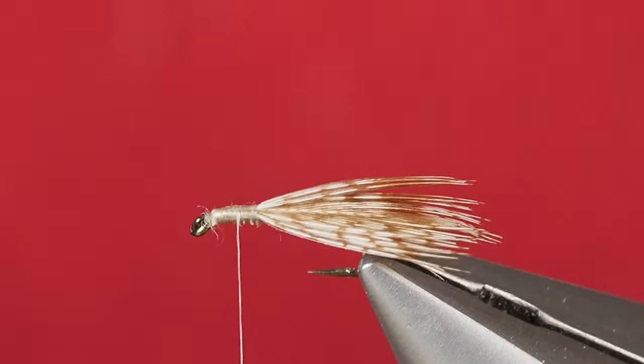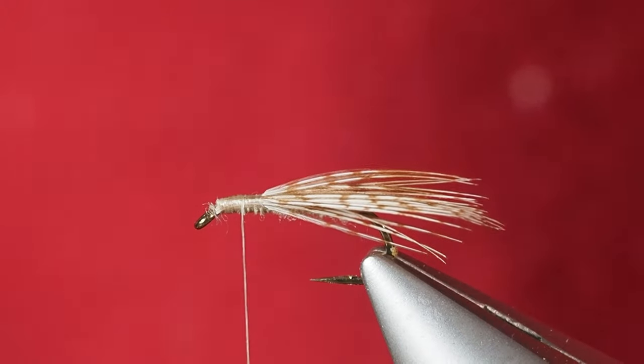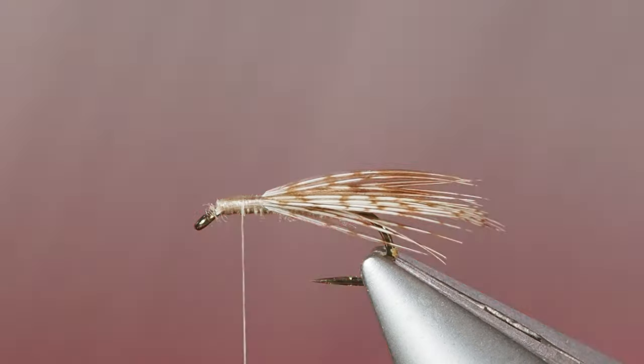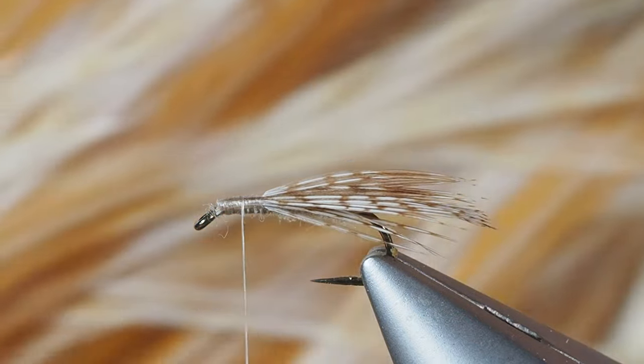We're going to use a hackle on the front end of the fly that's going to be looking like its legs. You can use a whole variety of different things. I just chose this time a really light barred ginger color.